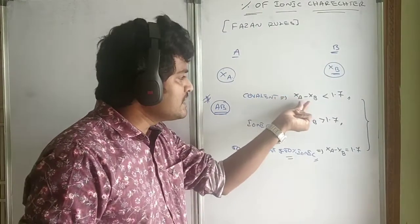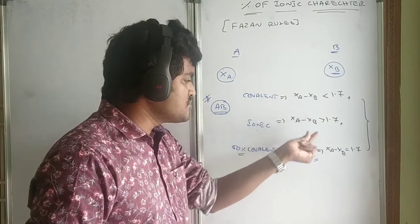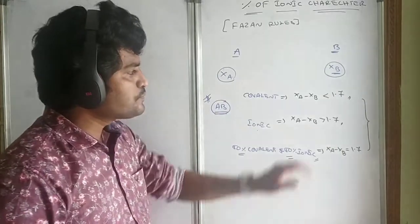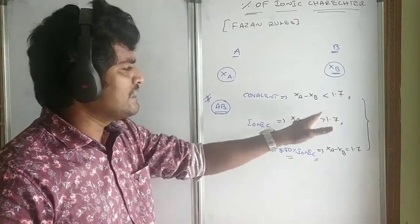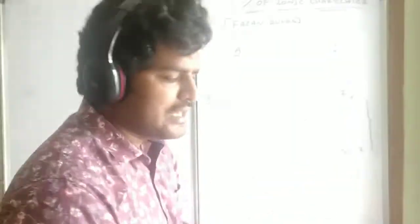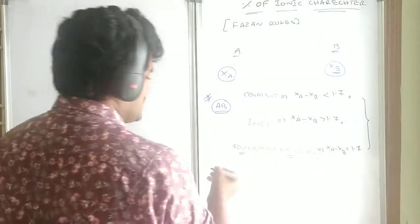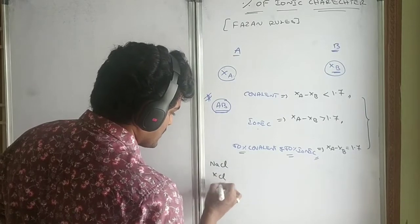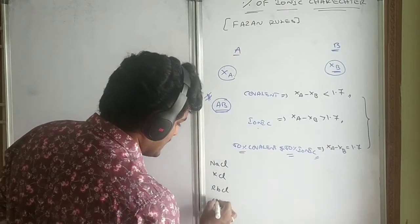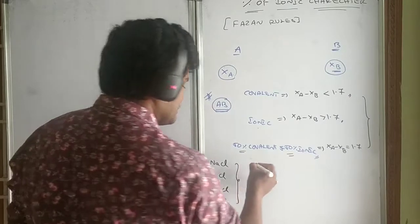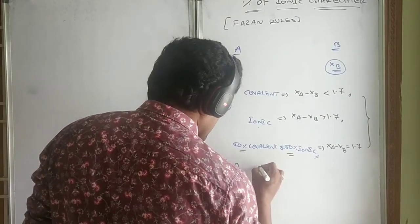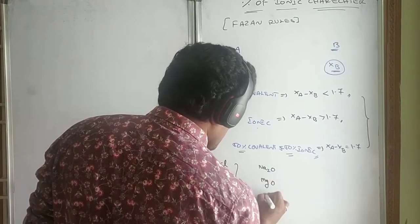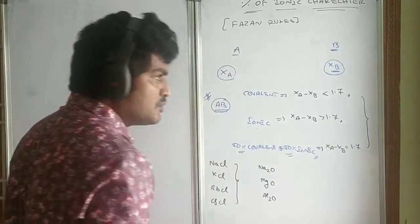If the electronegativity difference is exactly 1.7, that compound will be 50% covalent and 50% ionic in nature. By finding the electronegativity difference between the atoms, we can easily identify which will be covalent, which will be ionic, and which will be 50% covalent. For example, sodium chloride, potassium chloride, rubidium chloride, cesium chloride, sodium oxide, magnesium oxide, and aluminium oxide.